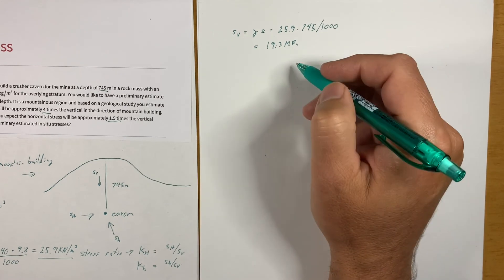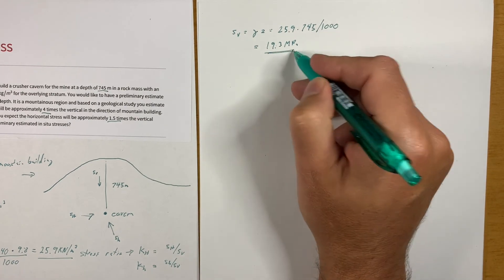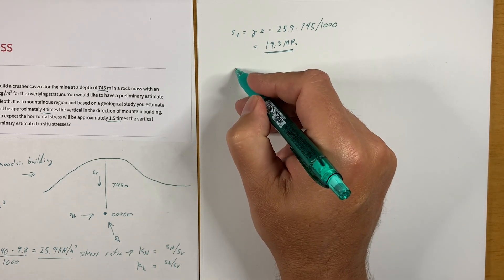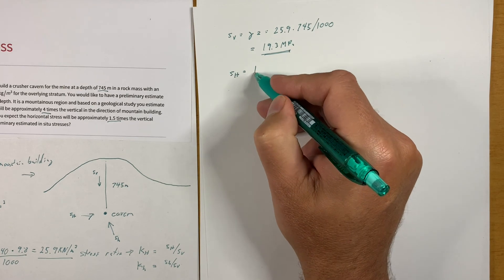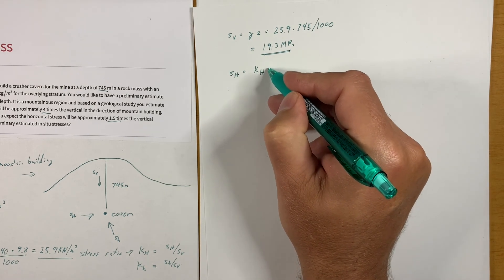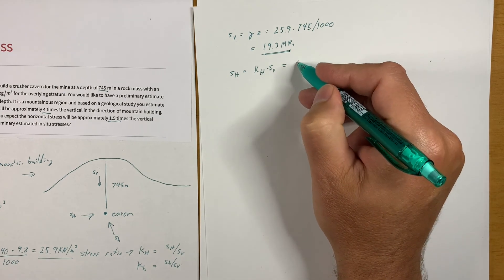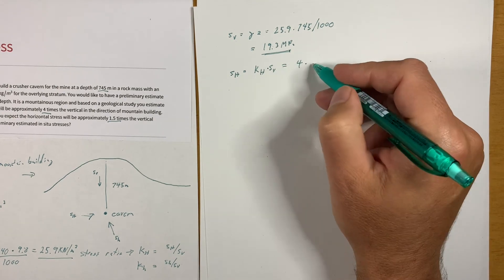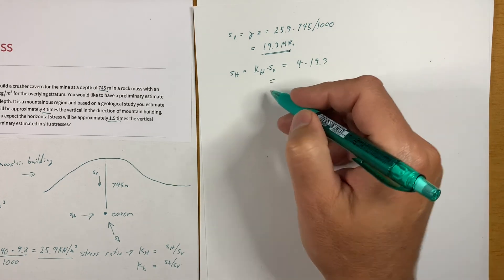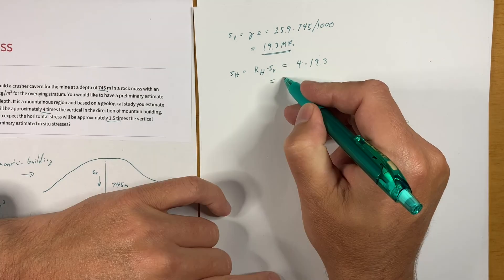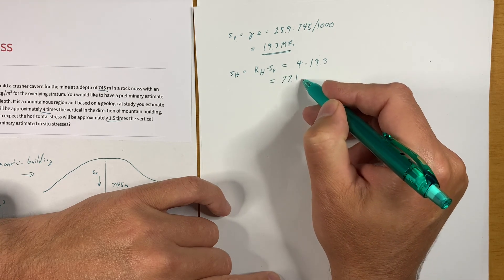Now if we want to get the maximum horizontal stress we want K_H times S_v, is equal to 4 times 19.3, is equal to 77.1 MPa.